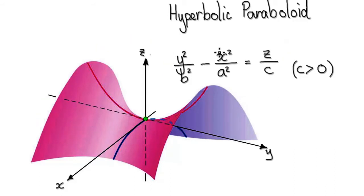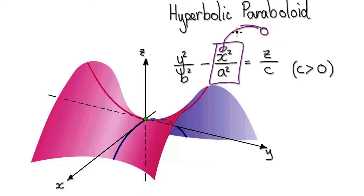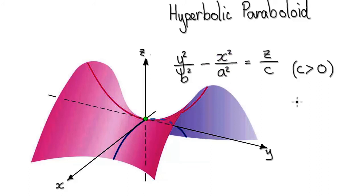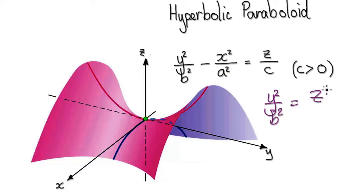As always, let's put 0 into the x and try to understand what's going on. When you put 0 into here, this term disappears, giving you this equation.